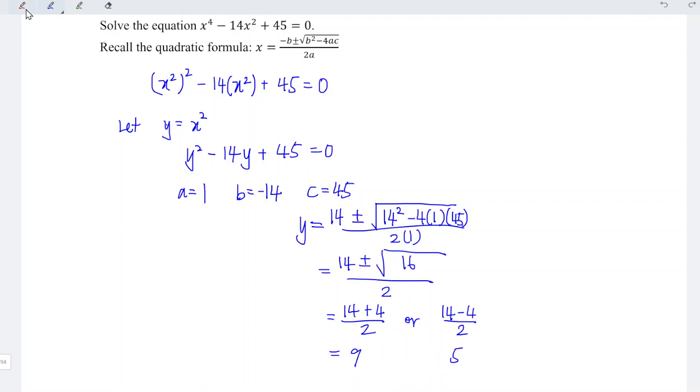Since y equals 5 or 9, and we have x squared equals y, this means x squared equals 5 or 9.